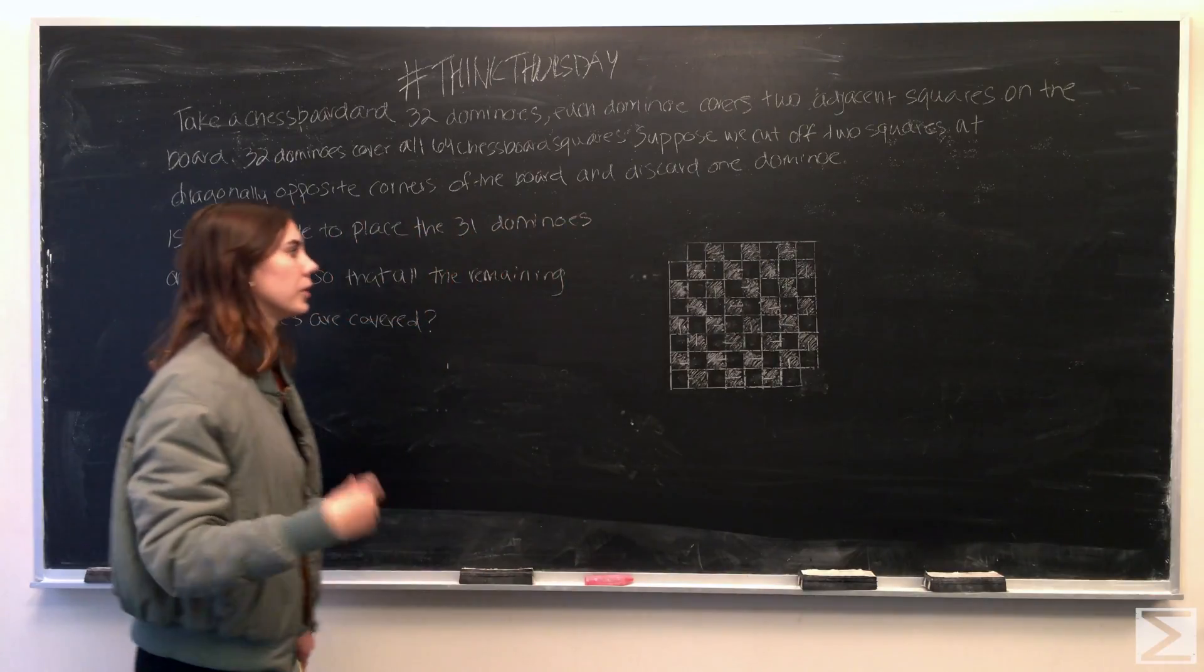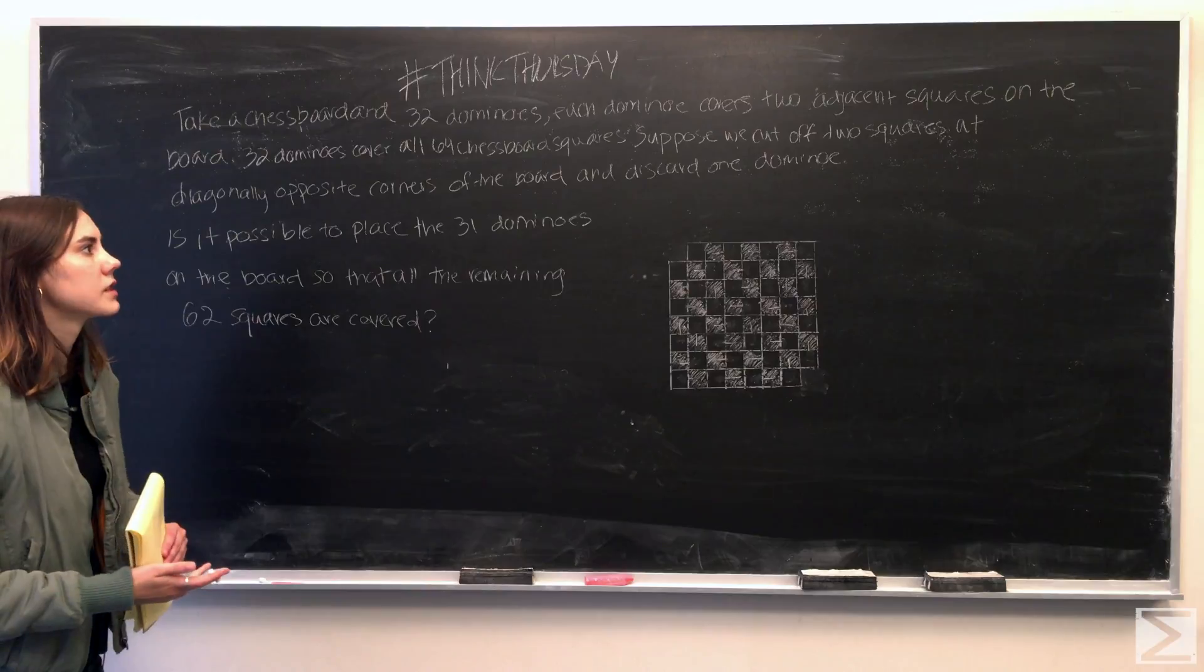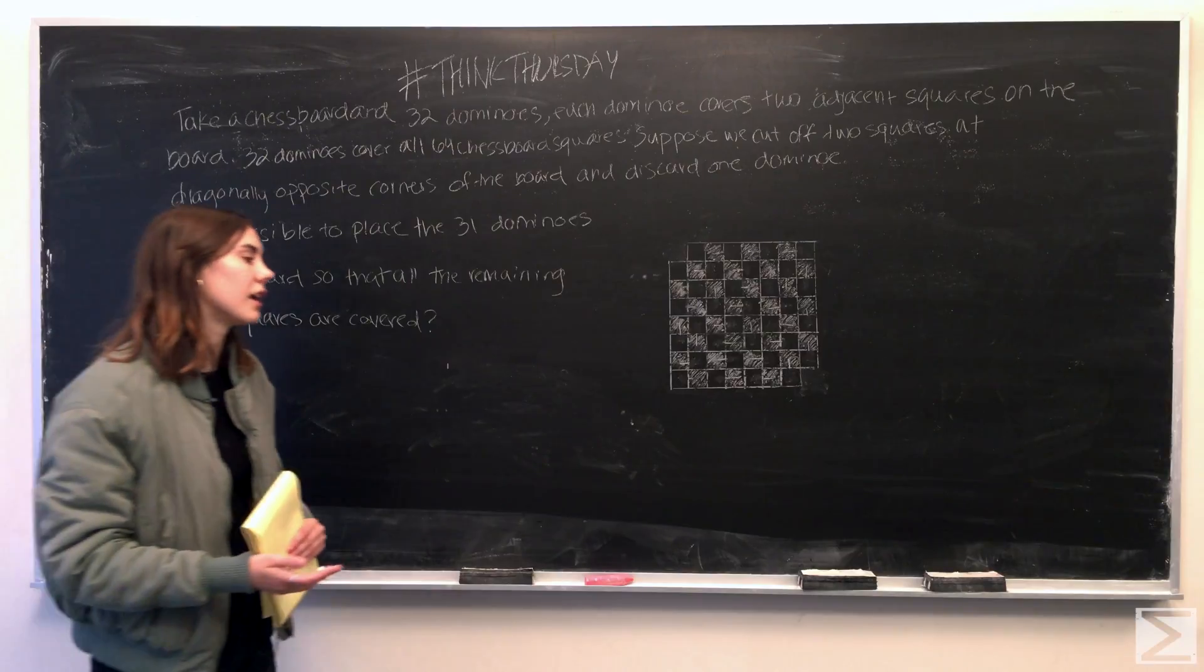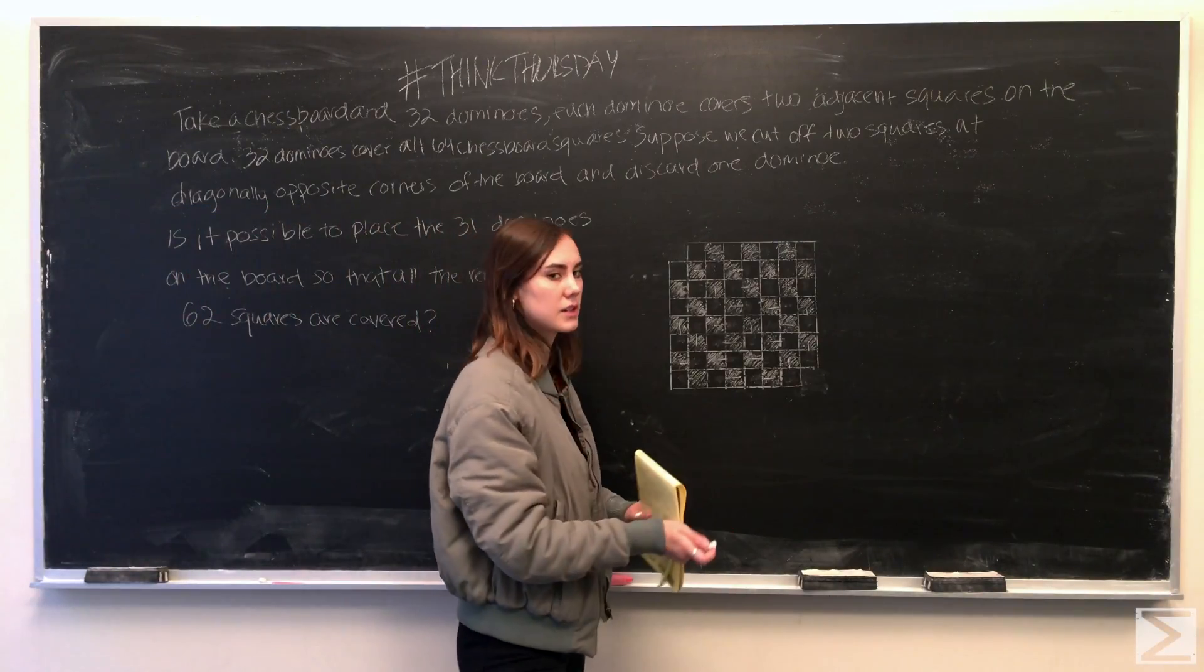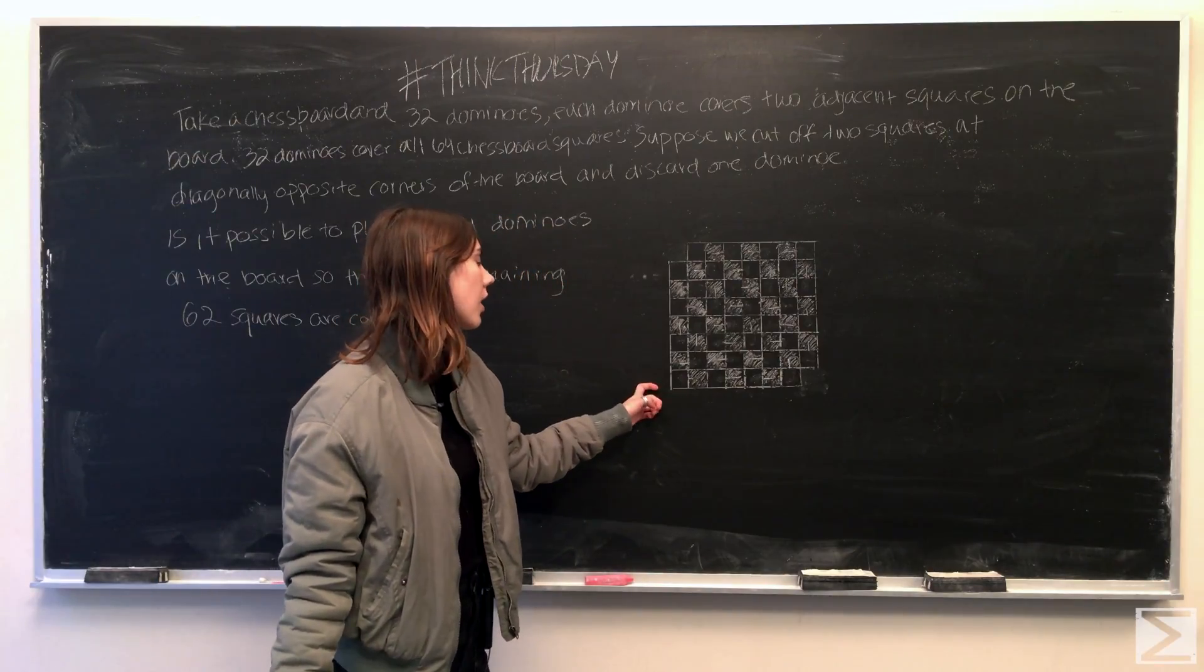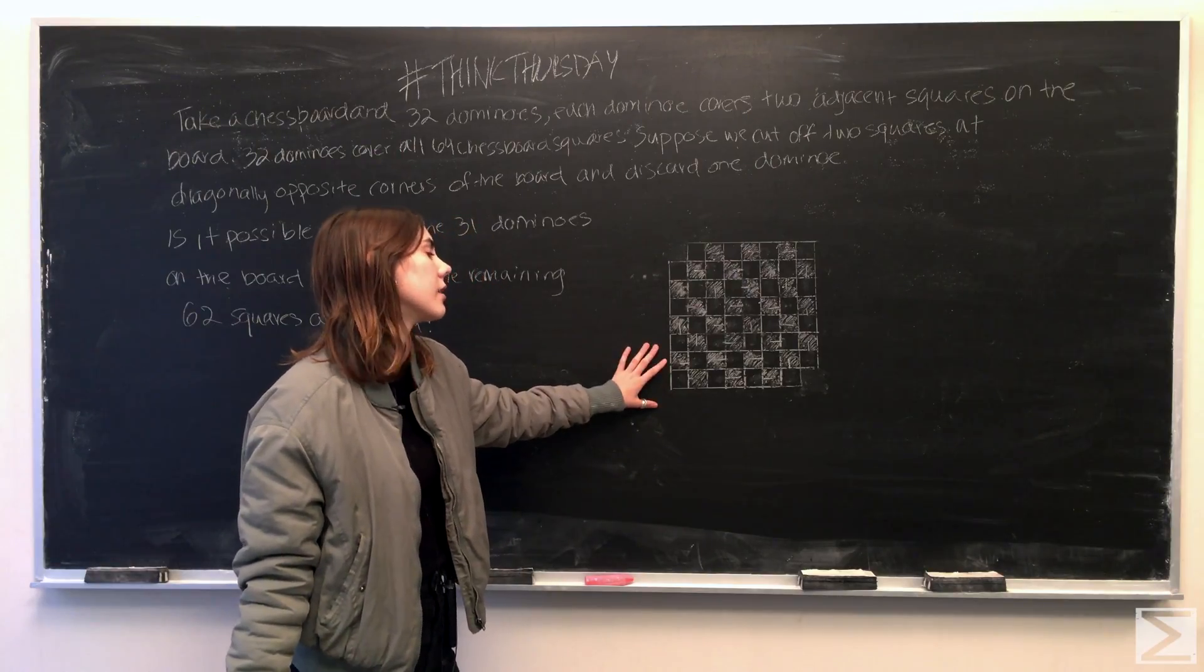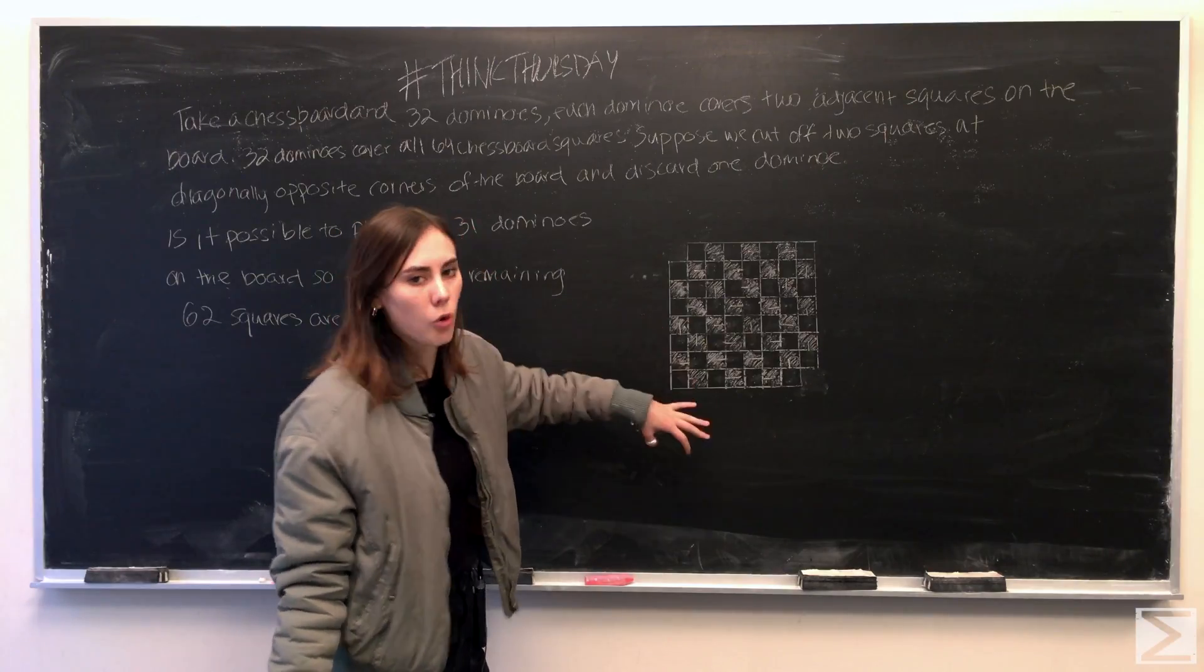And now we have this new mutilated chess board which we can solve for. And what you're going to notice is from the problem statement it says that a domino covers two adjacent squares on the board. And since it is a chess board, regardless of if we place a domino horizontally or vertically, it will cover both squares and both squares have to be opposite colors. So one square has to be black and one square has to be white, and that's true for each way that you could place a domino.